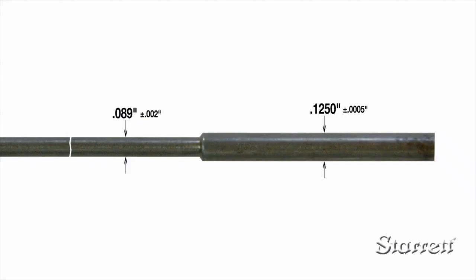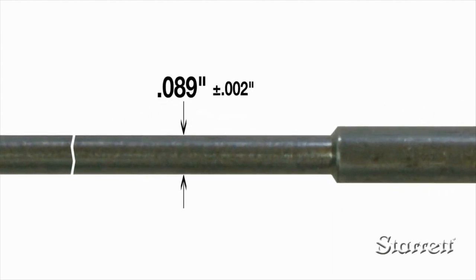Even if the micrometer has a ten thousandth scale, if a part has a larger tolerance, say plus or minus two thousandths, you would only read to the closest thousandth.